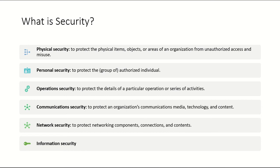There are different kinds of security. First is physical security: protecting the physical items, objects, or areas of an organization from unauthorized access and misuse — securing where you keep your servers, database servers, and other assets. Nobody should be able to make unauthorized physical access or misuse the system. Physical security also involves basic measures like putting locks and surveillance.